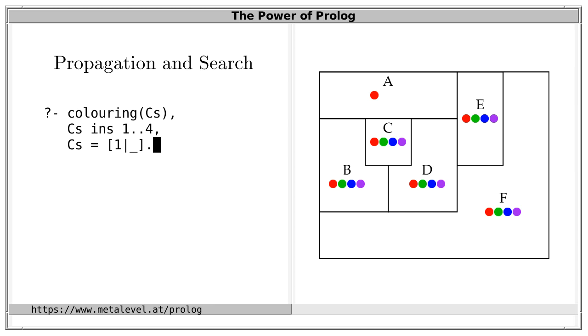And this constraint-based approach gives us a lot of flexibility. We can really start anywhere we want and we can instantiate the variables in any order. For example, let us start by stating that A is red and see whether we can complete this to a solution. So, logically, this is a specialization of the query. We say that A must be red, or more precisely the integer 1. And when we post this, we see that red is automatically removed from all adjacent regions of A. So, B, C, D and E can no longer be red, or 1. And this is called constraint propagation.